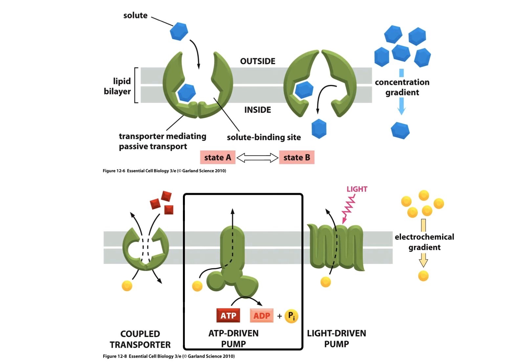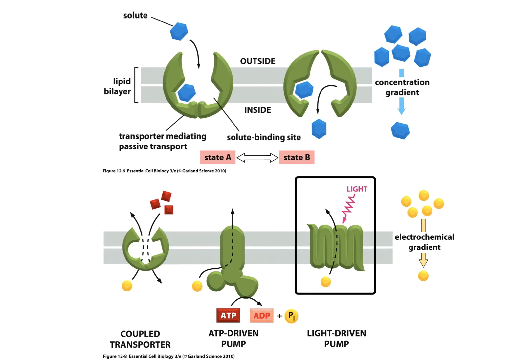There are also ATP-driven pumps — one of these is a calcium pump, and there are also sodium pumps — using ATP as energy to open a passage through the transporter to move things against an electrochemical or concentration gradient. There are also light-driven pumps that act against the electrochemical or concentration gradient by using light energy to activate certain molecules, usually chlorophyll or rhodopsin, to move ions across the membrane in one direction against the gradient.